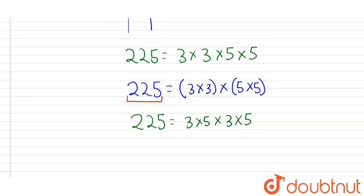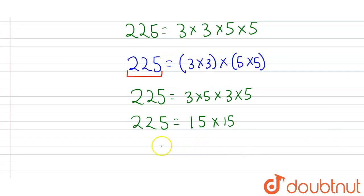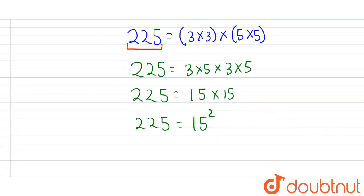Now further we can write it as 225 equals 15 × 15. So 15 × 15 equals 15² equals 225. Therefore, we can see that the number whose square is 225 is 15.